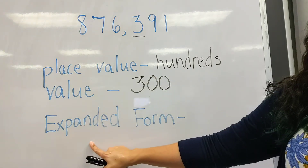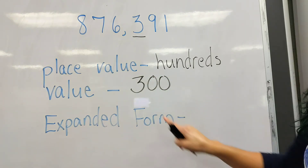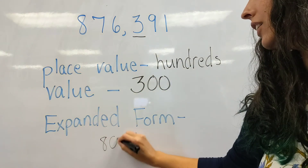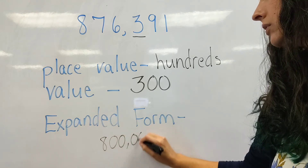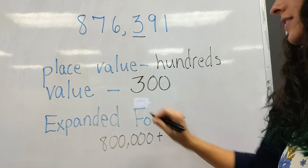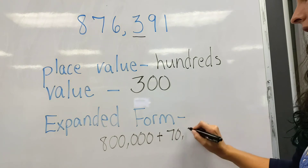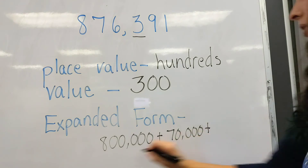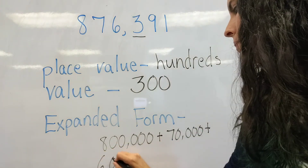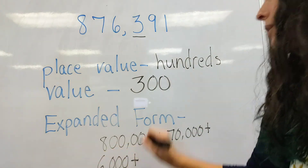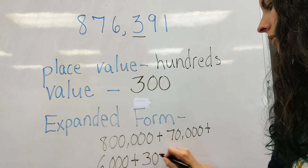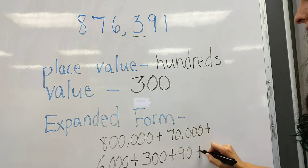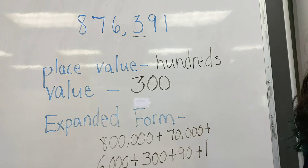And if I were to take this number and expand it out, I'd need to go each number. The eight is in the hundred thousands place — eight hundred thousand, plus seventy thousand, plus six thousand, plus three hundred, plus ninety, plus one.